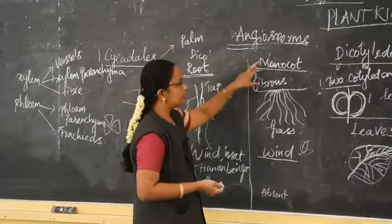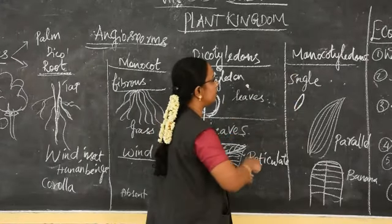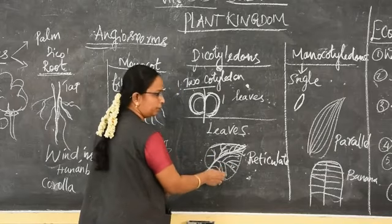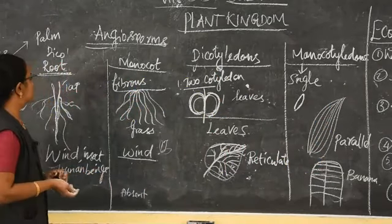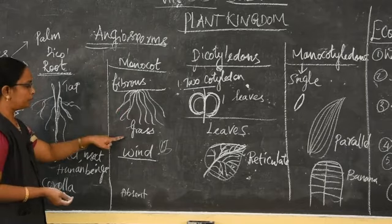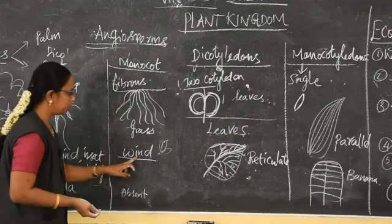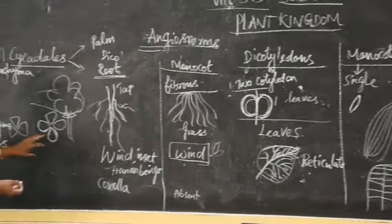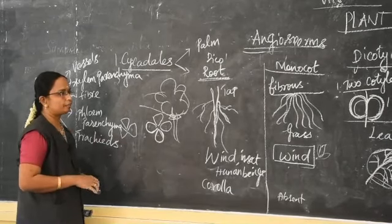When we come to the classification of angiosperms, it is divided into dicotyledon — two cotyledons — and monocotyledon — single cotyledon. Dicot shows reticulate venation with many branches, while monocot shows parallel venation with no branches. Dicot has a taproot system; monocot has a fibrous root system, with grasses as an example. In dicot, pollination is by wind, insect, or human beings; in monocot, pollination is only by wind. Flowers in dicot are tetramerous or pentamerous; in monocot they are trimerous.